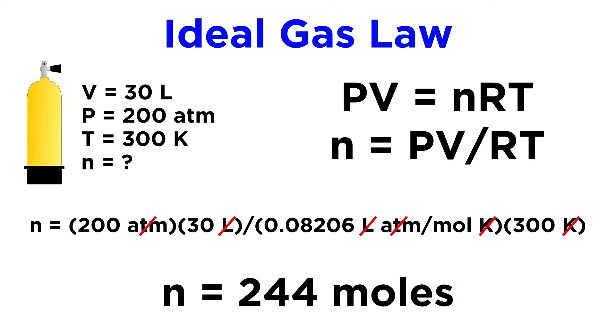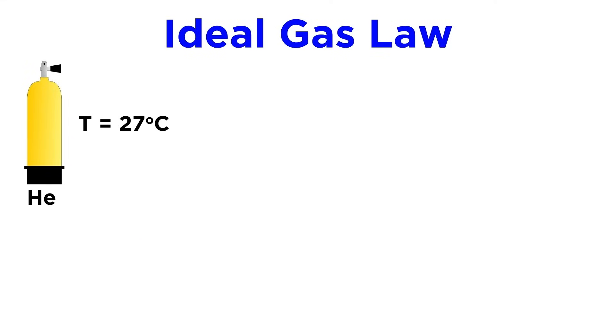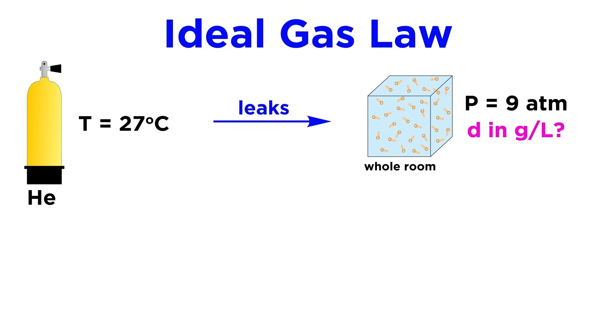We can go a step further as well and infer things about the density of a gas. Say that a helium tank is opened inside a sealed room at 27 degrees celsius, which then leaks out until the pressure of the gas in the room is 9 atmospheres. What is the density of the gas in grams per liter?